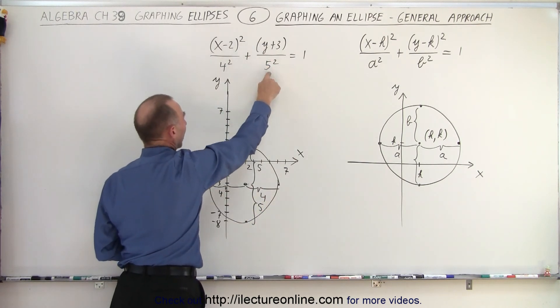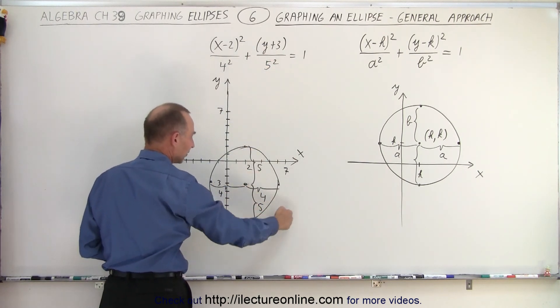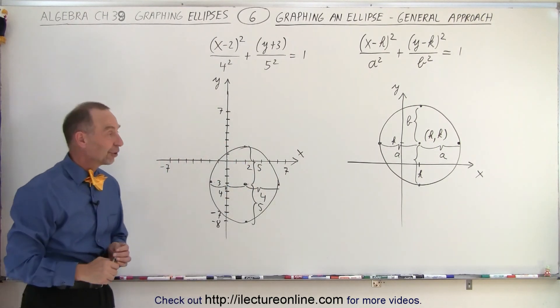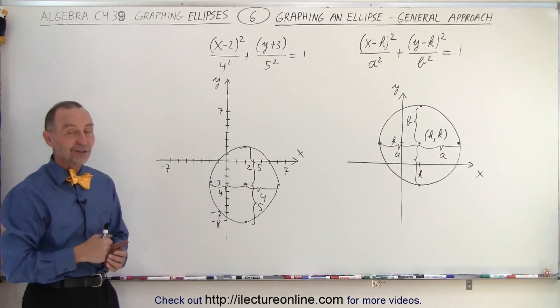Then we look at the number associated with y. You go up five and down five. Then you connect all those outside dots. And you have the correct ellipse. And that is how it's done.